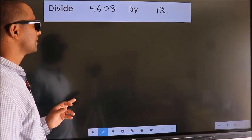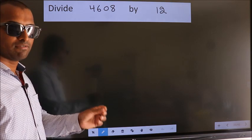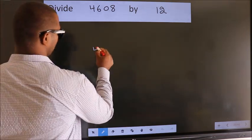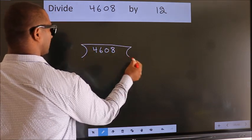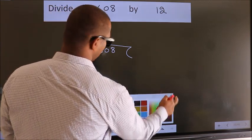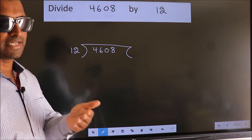Divide 4608 by 12. To do this division, we should frame it in this way. 4608 here, 12 here. This is your step 1.